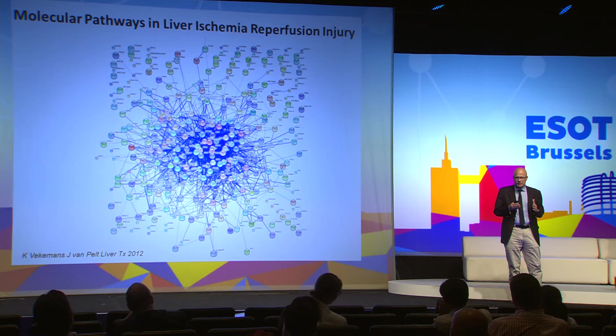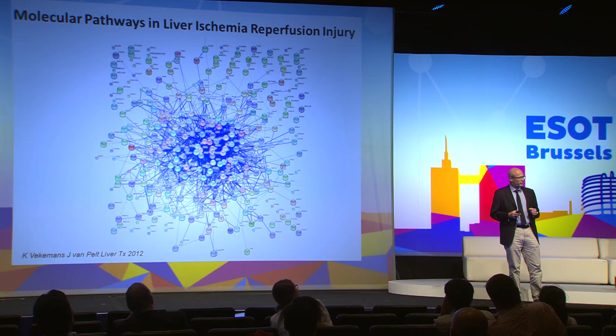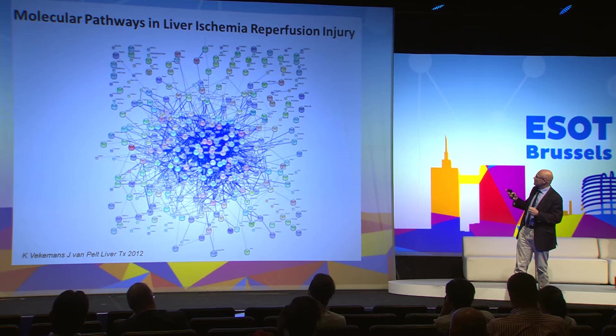This means that trying to simply abrogate ischemia-reperfusion injury may not necessarily be efficient. And in addition, it may be very complex, because there is a whole series of pathways involved in liver ischemia-reperfusion injury, so you can realize it is not easy to abrogate this mechanism.